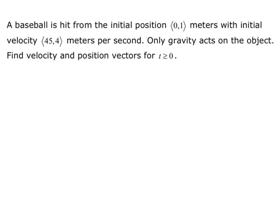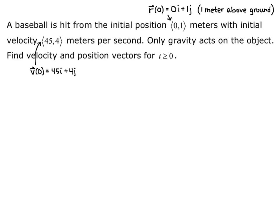We treat this problem like an initial value problem, just like we did when we talked about integrating vector functions. We need initial conditions: the vector (0, 1) tells us that position at time 0 is 1 meter above the ground, so r(0) = 0i + 1j. Our other initial condition is initial velocity, v(0) = 45i + 4j, meaning 45 in the x direction and 4 in the y direction.